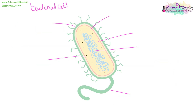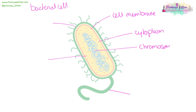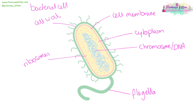Here we have our bacterial cell, which has its cell membrane controlling what goes in and out, the cytoplasm where most of the reactions take place, the chromosome — the DNA not in a nucleus — the flagella which is used for locomotion, ribosomes for protein synthesis, and then on the outside you have the cell wall.